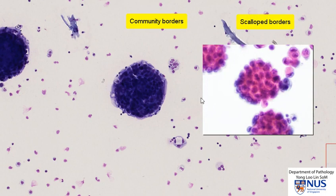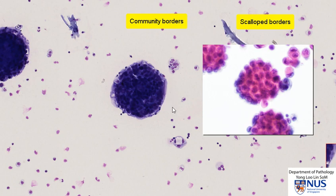Scalloped borders are more associated with mesothelial cells. However, this is not a hard and fast rule — sometimes they can be seen in epithelial cells as well. When we see smooth community borders, we are usually a little bit worried because they are often seen in metastatic carcinoma.